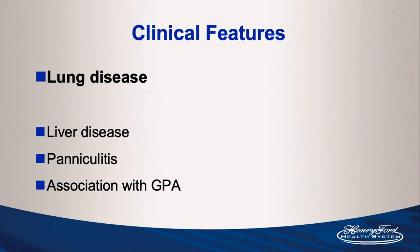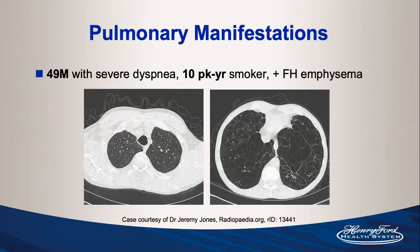The clinical features I'll focus on are lung disease and liver disease, with two associations important to know for boards. The classic alpha-1 pulmonary patient is fairly young — around 49 — with severe dyspnea, modest smoking history of about 10 pack-years, and a family history of emphysema. Looking at CT imaging, the classic phenotype is extensive basilar panlobular emphysema with little to no involvement in the upper lung fields.